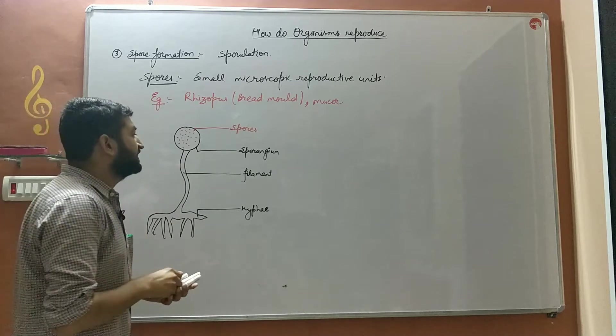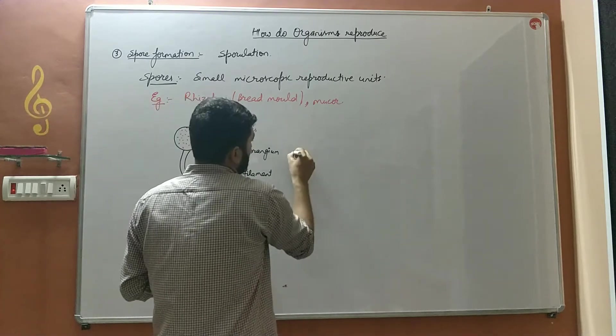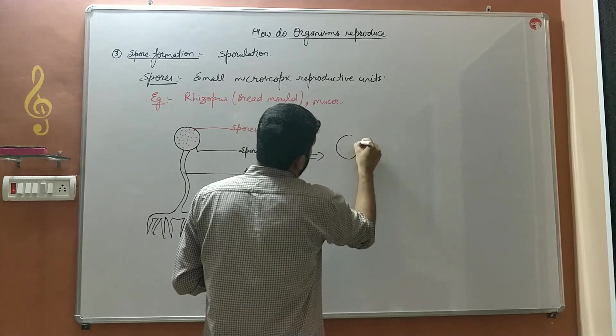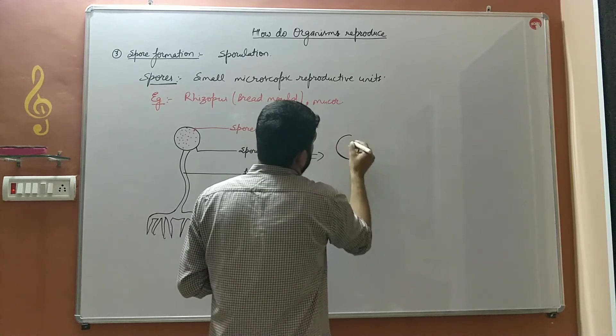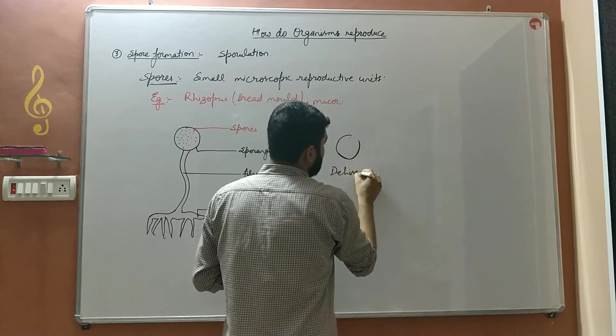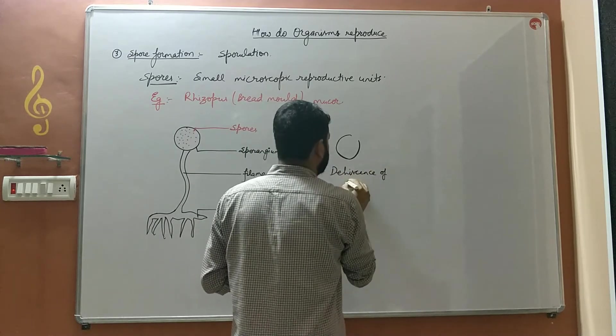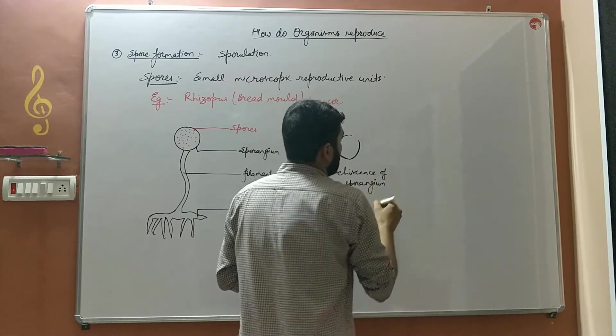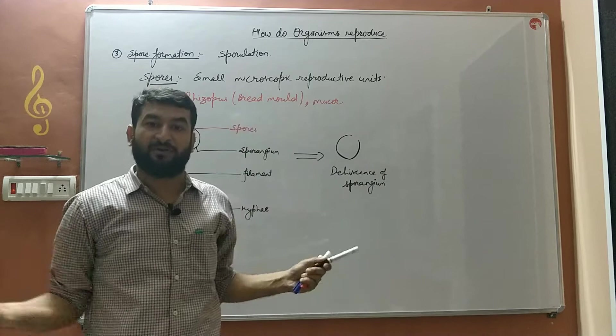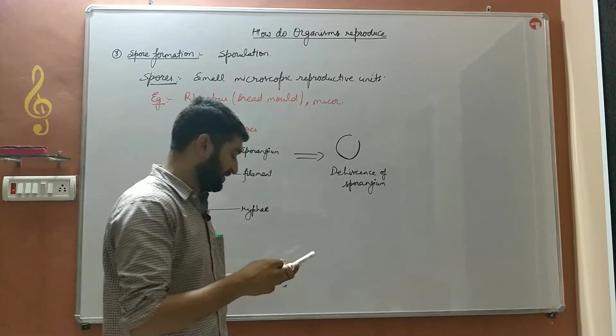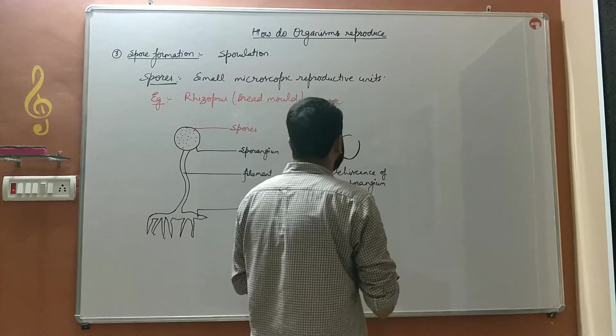After a particular time, the wall of the sporangia bursts, it becomes cracked open and that is known as dehiscence of sporangia. Dehiscence means bursting open.